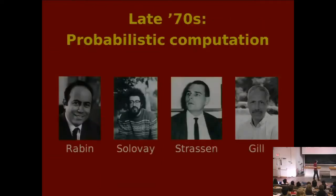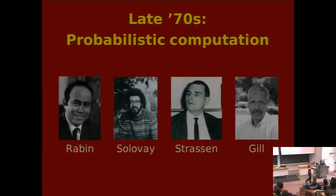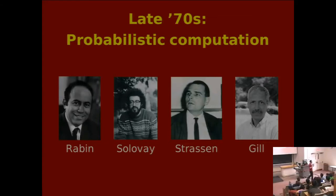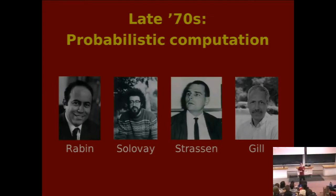Let me continue going forward in time to the 1970s, where people had the idea of using randomness and probability when doing computations. Here are some of the early pioneers in this area. This is actually the most important part of the lecture — I'm going to talk for a long time about just circuits and probability, two topics you've seen before, and then quantum will just be a little thing we add on at the end. So we're going to spend a lot of time talking about probabilistic circuits.